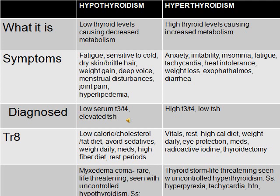Complications of hypo and hyperthyroidism: hypothyroidism can lead to myxedema coma, a life-threatening condition seen with uncontrolled hypothyroidism. Signs and symptoms include change in mental status, hypothermia, severely decreased metabolism, and respiratory or cardiac depression. Treatment is intensive supportive care with hemodynamic therapy.